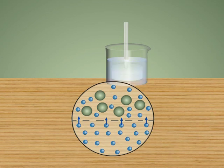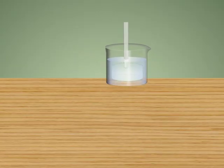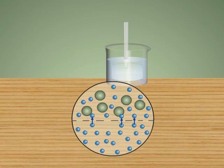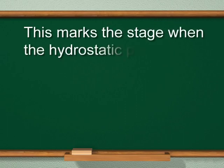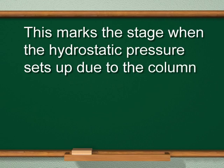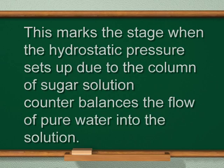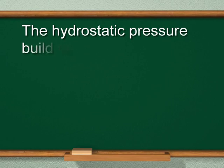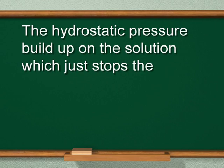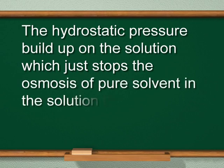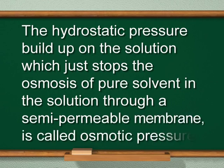Let us take an aqueous sugar solution in a porous pot having a semi-permeable membrane of cupric ferrocyanide, attached with a long glass tube, immersed in distilled water. Osmosis takes place from water to the aqueous sugar solution through the semi-permeable membrane. As a result, the solution level in the long glass tube rises over time. After a few days, the level attains a definite maximum value. This is where the hydrostatic pressure set up by the column of sugar solution counterbalances the flow of pure water into the solution. This hydrostatic pressure build-up that just stops osmosis through the semi-permeable membrane is called osmotic pressure.